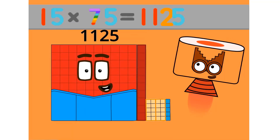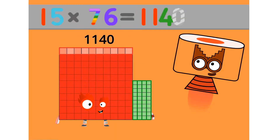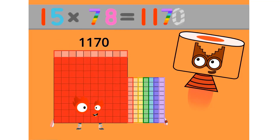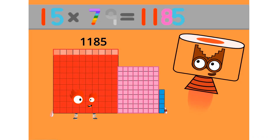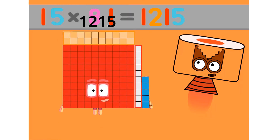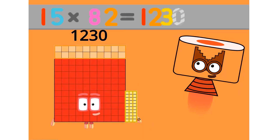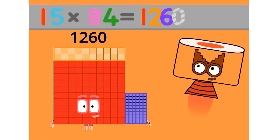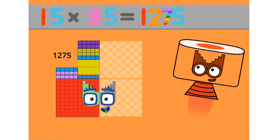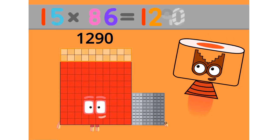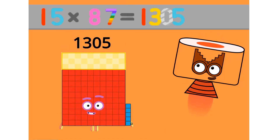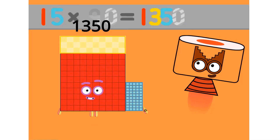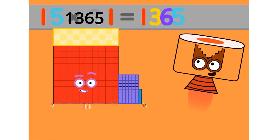15 x 71 equals 1065. 15 x 72 equals 1080. 15 x 73 equals 1095. 15 x 76 equals 1140. 15 x 77 equals 1155. 15 x 78 equals 1170. 15 x 79 equals 1185. 15 x 80 equals 1200.